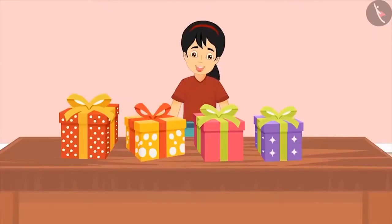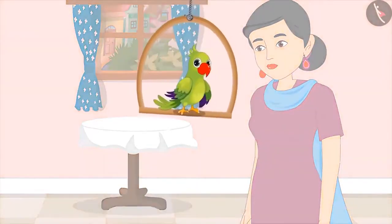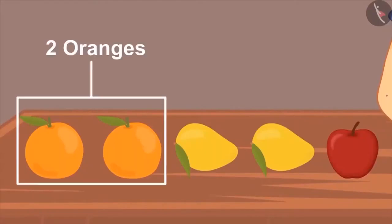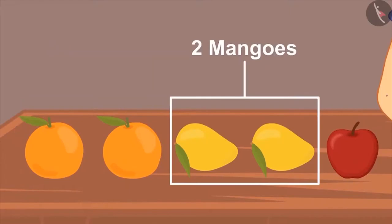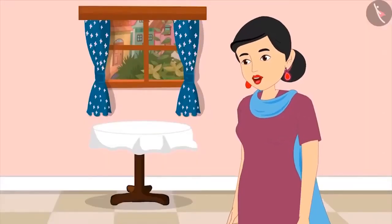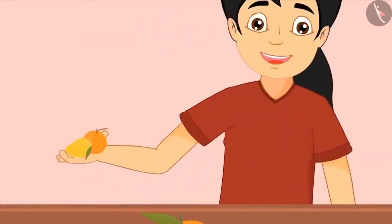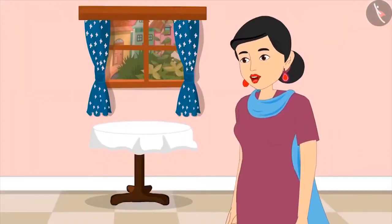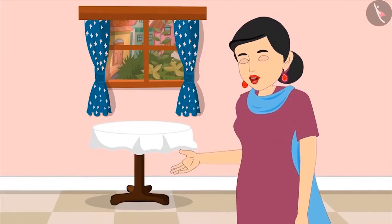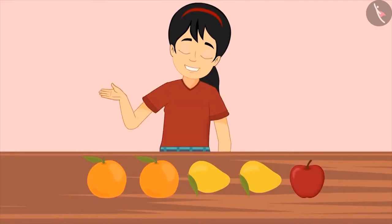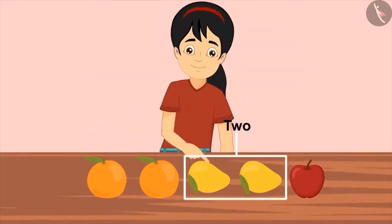Pinkie asks if she can open her gifts now. That evening, Pinkie places fruits on the table: two oranges, two mangoes, and an apple. Her mother asks for two mangoes. Pinkie picks one and two fruits, but her mother says: these two are not mangoes — I asked for two mangoes, not any two fruits. Pinkie corrects herself and gives one and two mangoes. Am I right this time? Yes, Pinkie, very good.